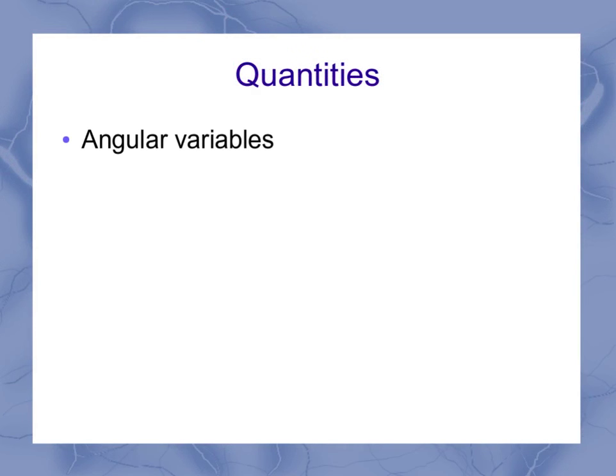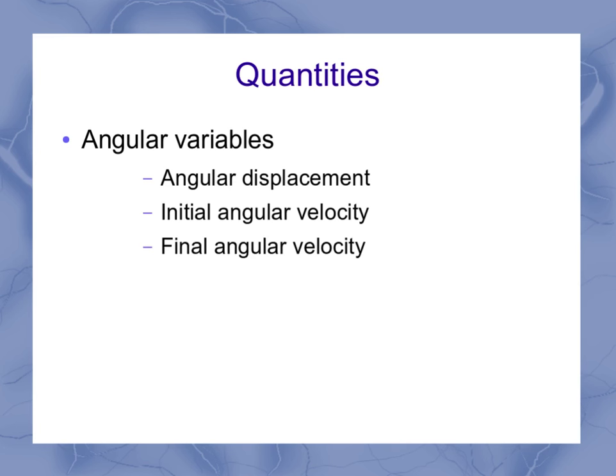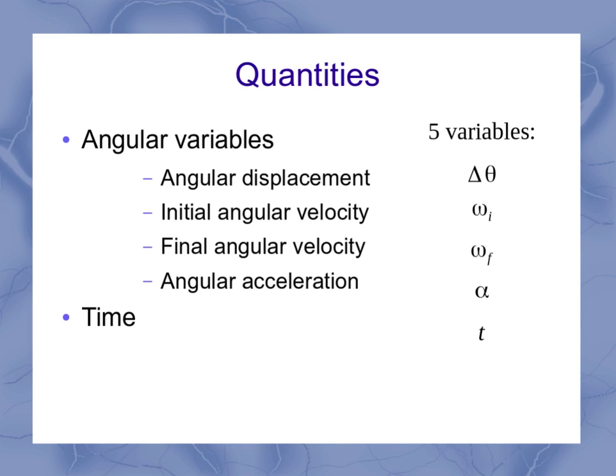Well, now we're working with angular variables. So we have the angular displacement, the initial angular velocity, the final angular velocity, the angular acceleration, and time. Time is not an angular variable; time is just time. So we still have five variables, but now we have their symbols for the angular versions: delta theta, omega i, omega f, alpha, and t.